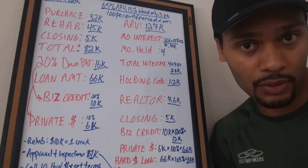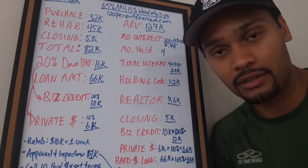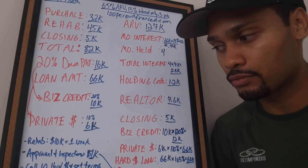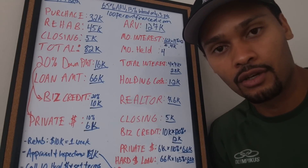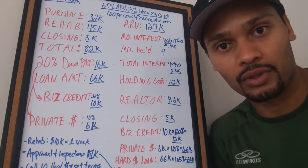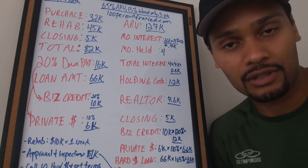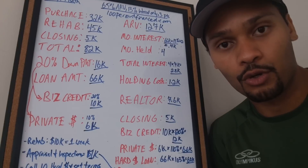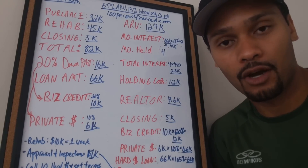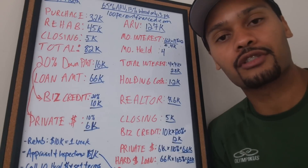Tell them a little about your situation — whether you have W-2 income or not — and ask if you might qualify. You can find hard money lenders in the yellow pages, phone book, online, or at your real estate investment associations or REIA groups. Just network and you'll find hard money lenders, or rehabbers affiliated with them.